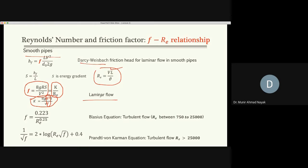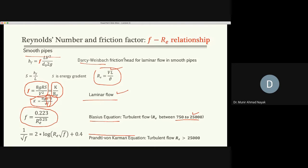For turbulent flow where Reynolds number is between 750 and 25,000, Blasius's equation is applicable — still for smooth pipes. When Reynolds number is even higher, above 25,000, Prandtl-von Kármán equation applies. These three equations — for laminar and turbulent flow — are all based on smooth pipes, not open channel flow.